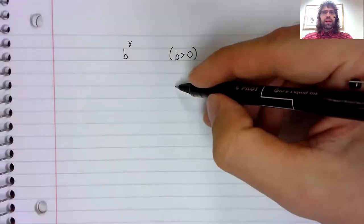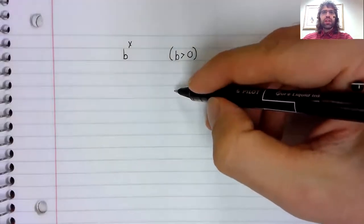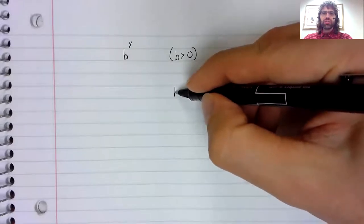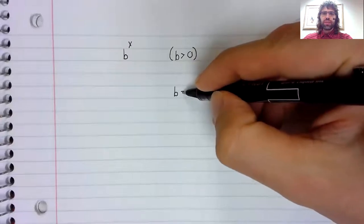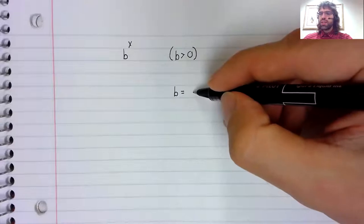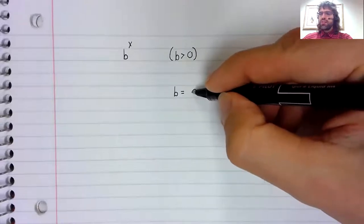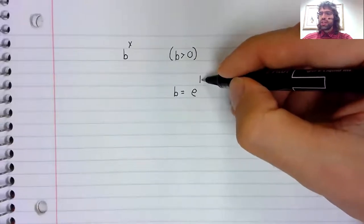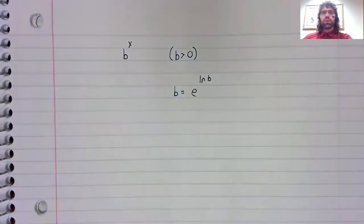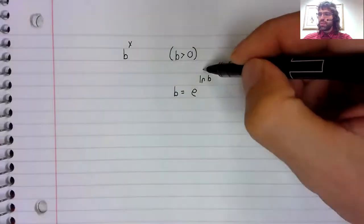The exponential function and the natural logarithm are inverses. Any positive number b is e raised to the power of the natural logarithm of b.